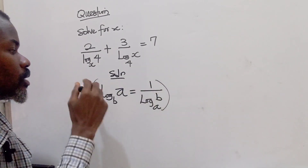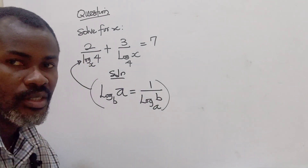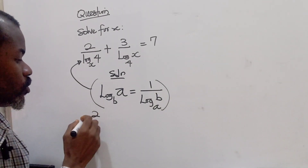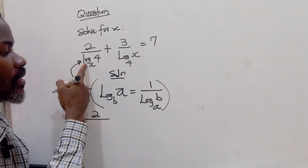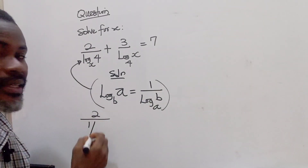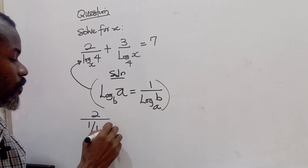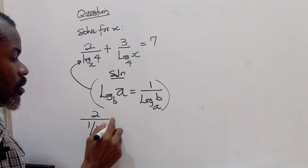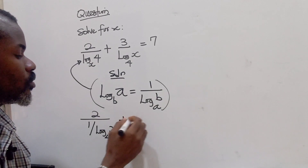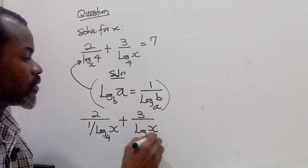Applying this reciprocal law to the first part of the equation: log 4 base x becomes 1 divided by log x base 4. So our equation now reads: 1 over log x base 4, plus 3 divided by log x base 4, equals 7.